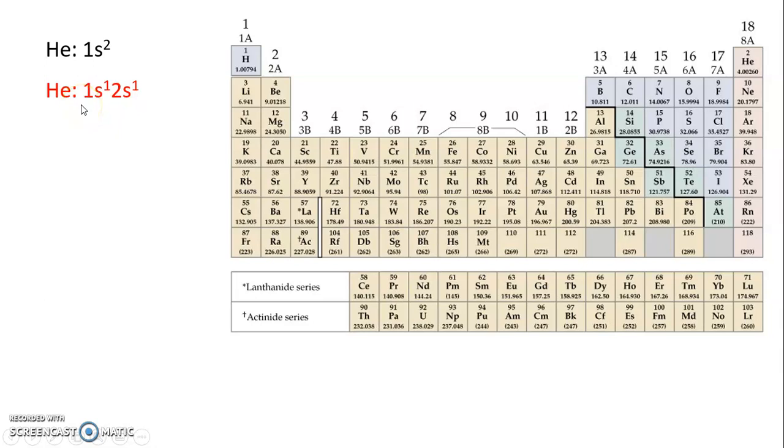Excited states are always higher in energy. It doesn't matter which orbital we pick to promote that electron into. For example, we could promote it into a 3p orbital. That's going to be a little bit higher in energy, but it's still an excited state. Anything that's not the ground state is going to be an excited state.